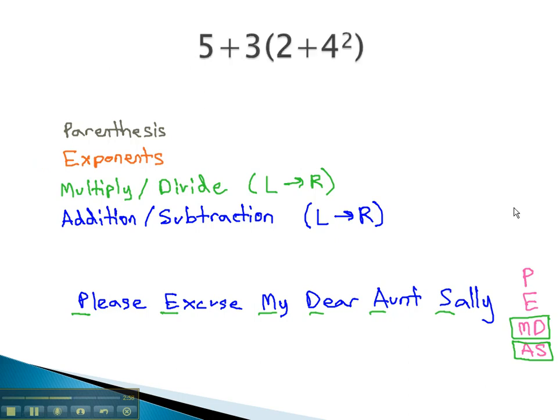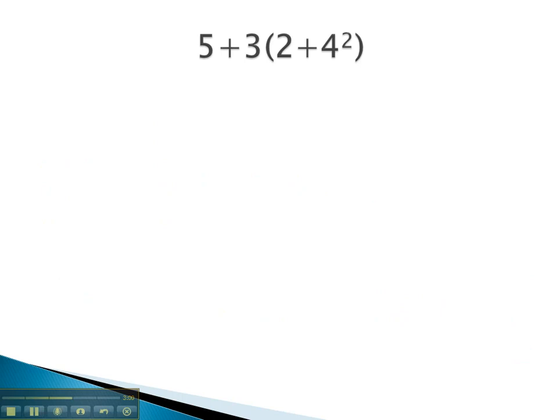Let's try an example and see if we can remember the order that comes from PEMDAS. PEMDAS tells us to do the parentheses first. Inside the parentheses, order of operations asks us to start with the exponent. So we'll do the exponent first, and I'll copy the rest of the problem exactly like it is. 5 plus 3, parentheses 2 plus 4 squared is 16.